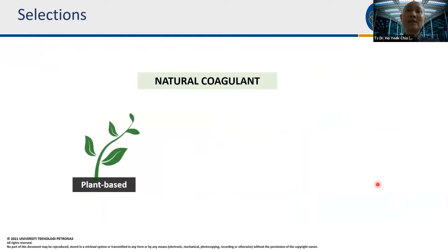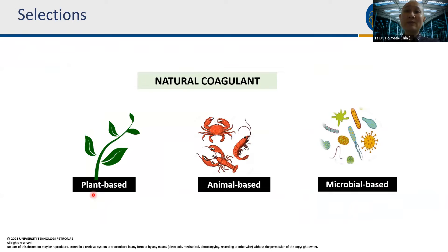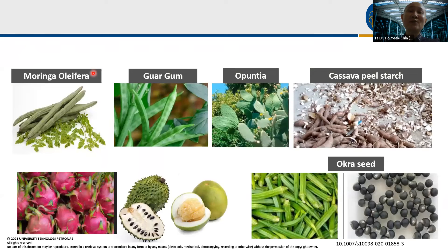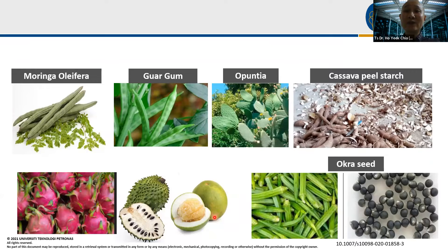There are several selections of natural coagulants available worldwide — plant-based, animal-based, and microbial. I'm focusing on plant-based sources. Examples include cassava peel, cactus, guar gum, moringa, okra, and fruits like pitaya (dragon fruit), and noni fruit — which is said to be good for cancer. These are all potential sources for natural coagulants, and there are many more.